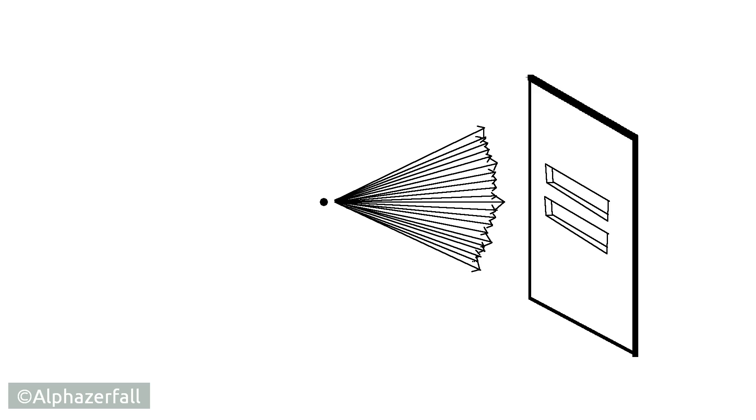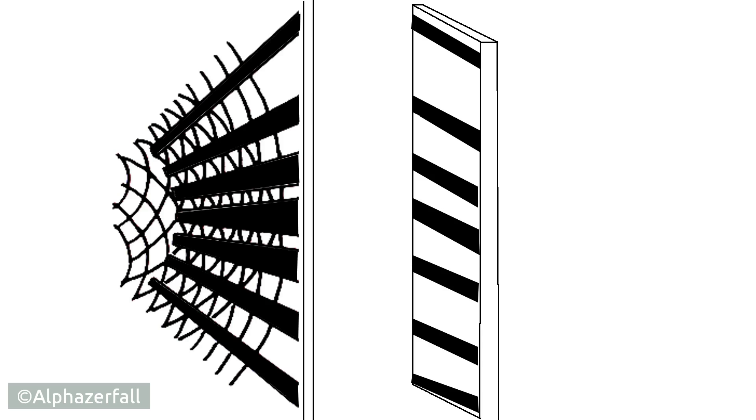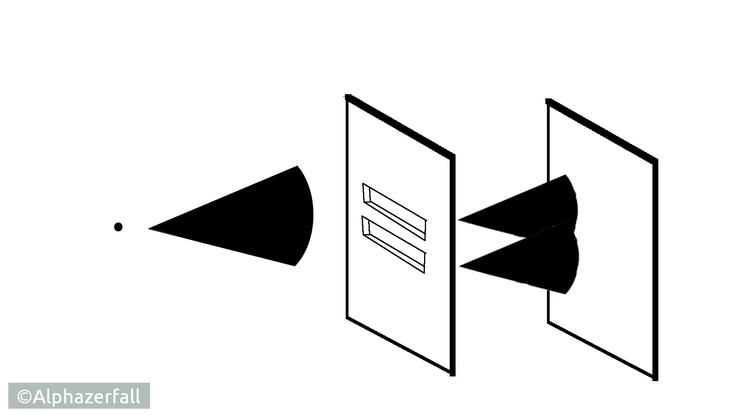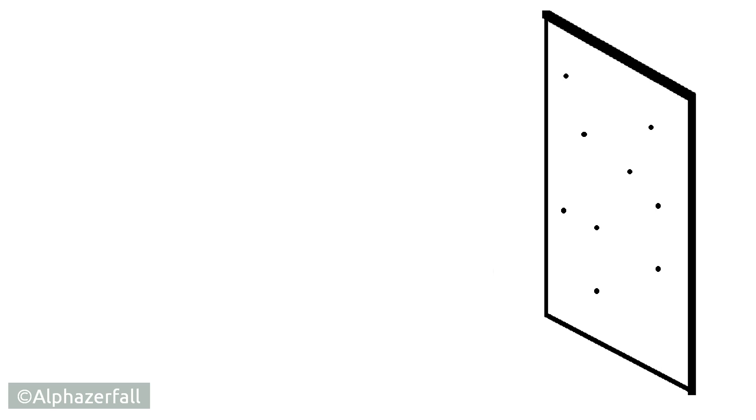So behind the gap both waves of possible ways interfere like all waves do. And at the second wall we see small dots which are the electrons because we observe them at this point.